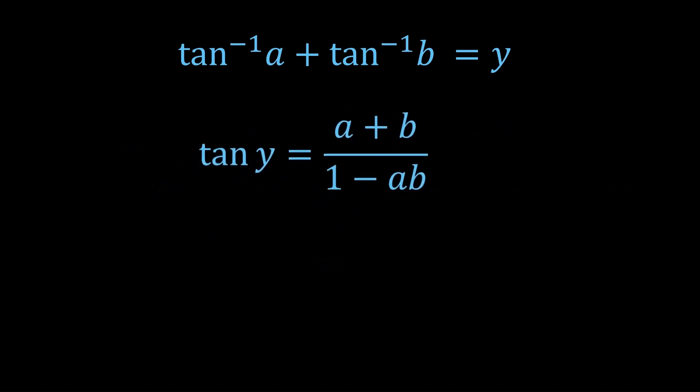We can take tan inverse of both sides, but we have to be careful. We don't know if y is always in minus π on 2 to π on 2. So we should just use the general solution for tan. Link in the description for a video on general solutions.